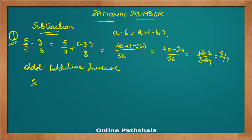If I have 5 by 7 and I have to subtract 3 by 8 from it, what I do is I take 5 by 7 and the additive inverse of 3 by 8, which is minus 3 by 8. Add the additive inverse in case of subtraction.